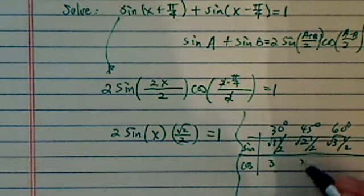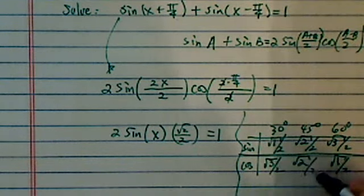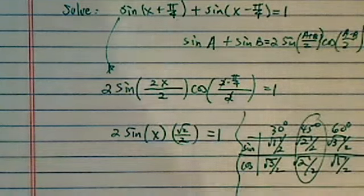And then for cosine it's 3, 2, 1, put a radical on, divided by 2. So I know pi over 4 is 45 degrees, and that gives me this one readily available.